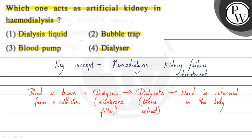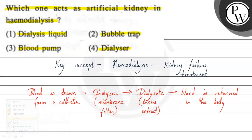So here, the question is which is the artificial kidney? The artificial kidney works as a dialyzer. Because our kidney is also a filter, and the dialyzer is also a membrane filter which works as a filtration device. That's why the dialyzer is an artificial kidney. So the right answer for this question is Option number 4.